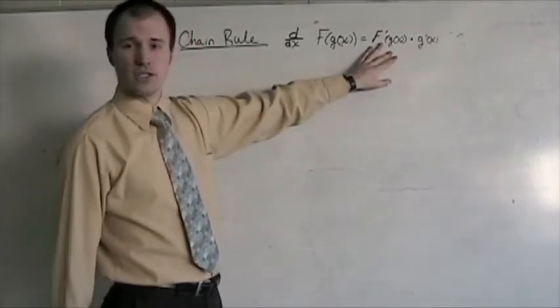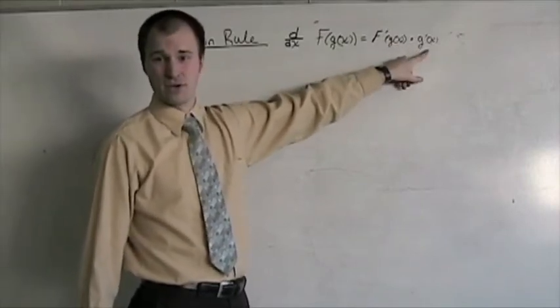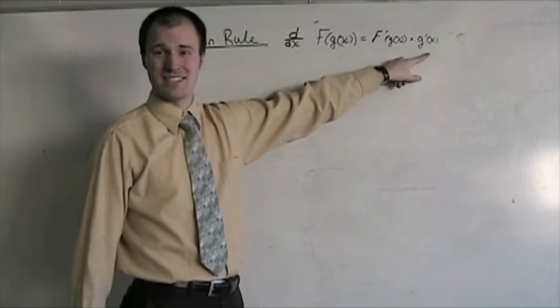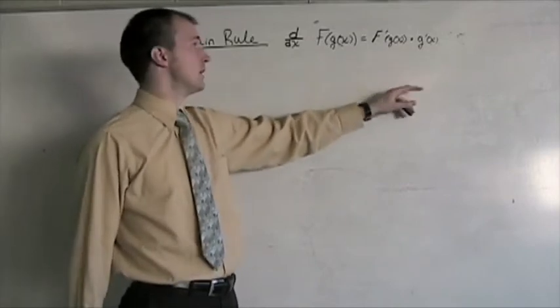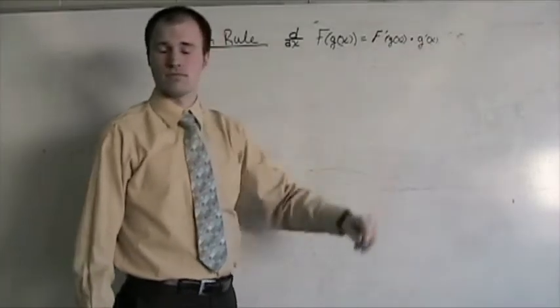If you notice here, we're going to end up with both the function g of x in this problem and its derivative explicitly stated in our new derivative. So, it's f prime times g of x times g prime of x.